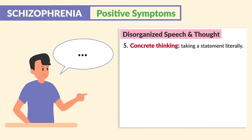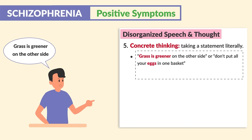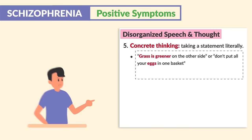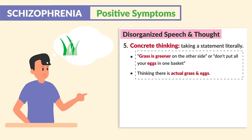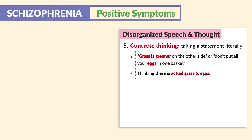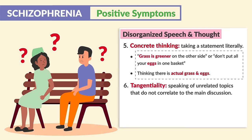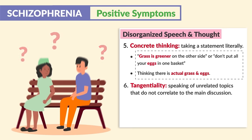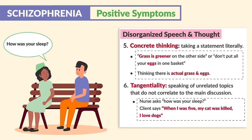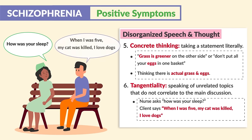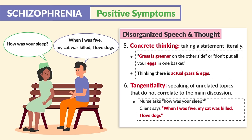Number five is concrete thinking — taking a statement literally. For example: 'The grass is greener on the other side,' or 'Don't put all your eggs in one basket.' The client thinks there's actual grass or actual eggs. And number six is tangentiality — speaking of unrelated topics that do not correlate to the main discussion. So the nurse asks, 'How do you sleep?' and the client says, 'When I was five, my cat was killed. I love dogs.' These are unrelated topics.